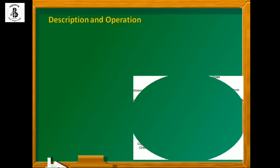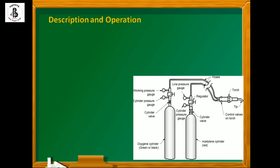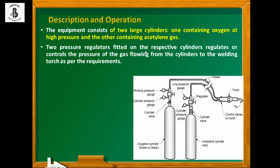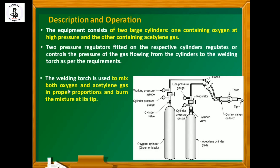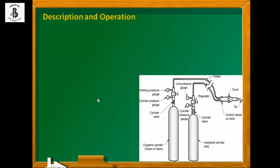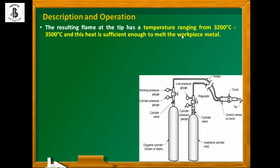For the setup of oxygen-acetylene gas welding: the equipment consists of two large cylinders — one containing oxygen at high pressure and the other containing acetylene gas. Two pressure regulators are fitted onto the respective cylinders to control the pressure of the gas flowing from the cylinders to the welding torch as per requirements. The welding torch is used to mix both gases in proper proportion and burn the mixture at its tip. A spark lighter or matchstick may be used to ignite the mixture at the torch tip.